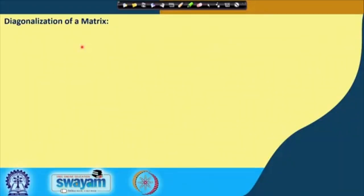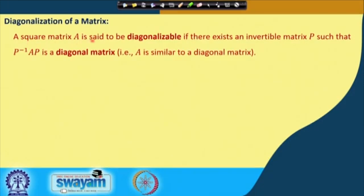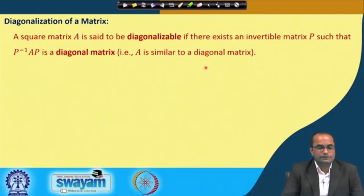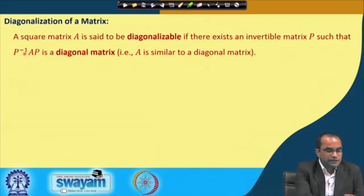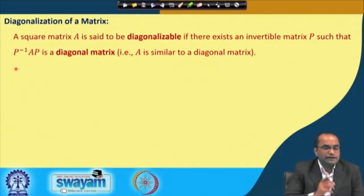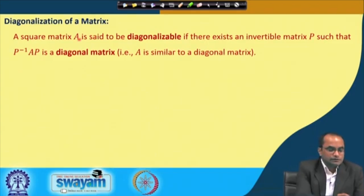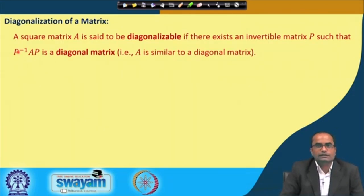What is the diagonalization of a matrix? A square matrix A is said to be diagonalizable if there exists an invertible matrix P such that P⁻¹AP is a diagonal matrix. In other words, A is similar to a diagonal matrix. We call A diagonalizable if we can find an invertible P such that P⁻¹AP becomes a diagonal matrix.